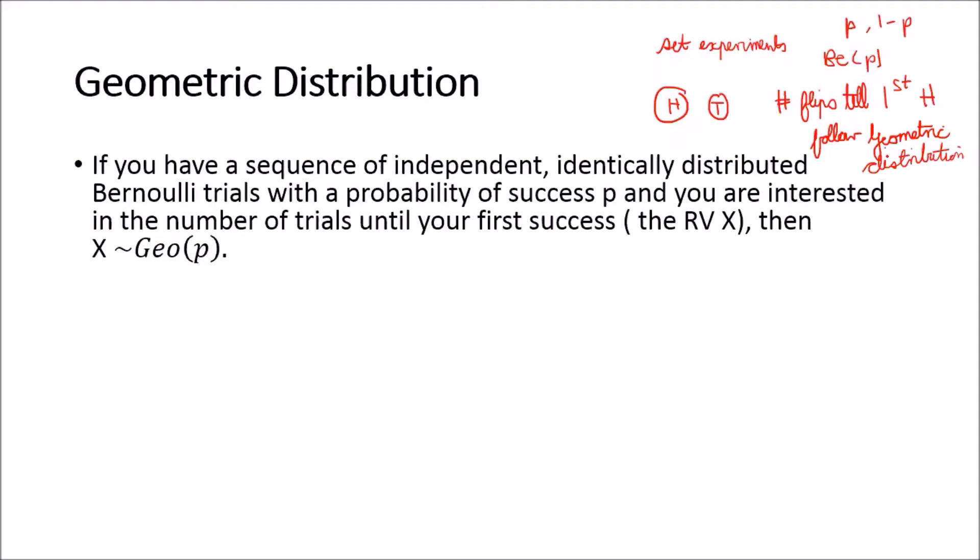We've covered the binomial distribution that counts the number of successes in a certain number of trials. Usually we denote that as n, the number of heads that we observe in n trials. Well the geometric distribution's job, if you will, is it counts the number of trials until we observe our first head in our consecutive flips.